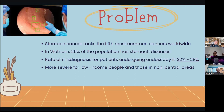Cancer is a type of lesion in the endoscopy image. Lesion detection is often carried out through endoscopy diagnosis, based on the examination of endoscopy images. However, according to some researchers, especially in Vietnam, about 26 percent of the population has stomach disease, and the rate of misdiagnosis of patients undergoing endoscopy is 20 to 28 percent.